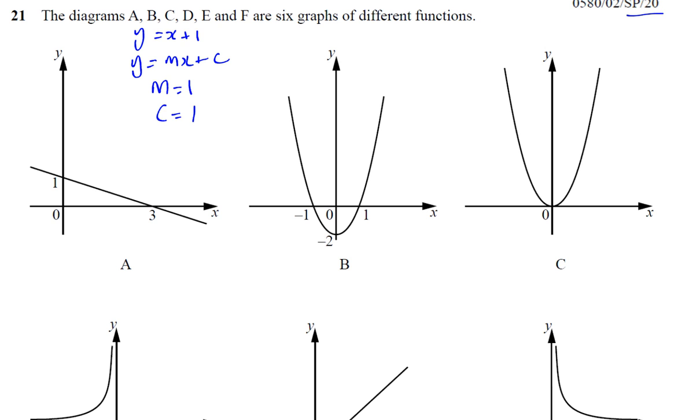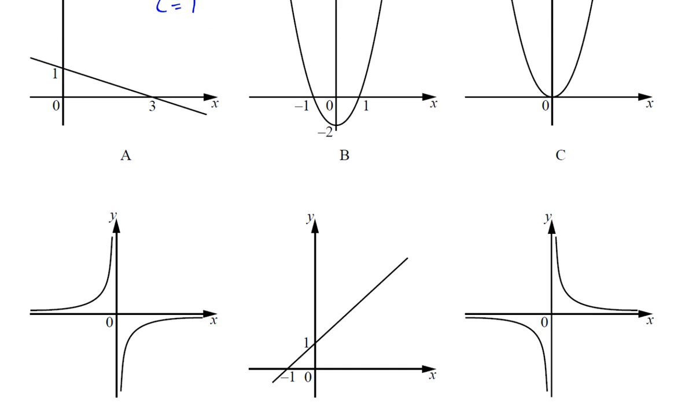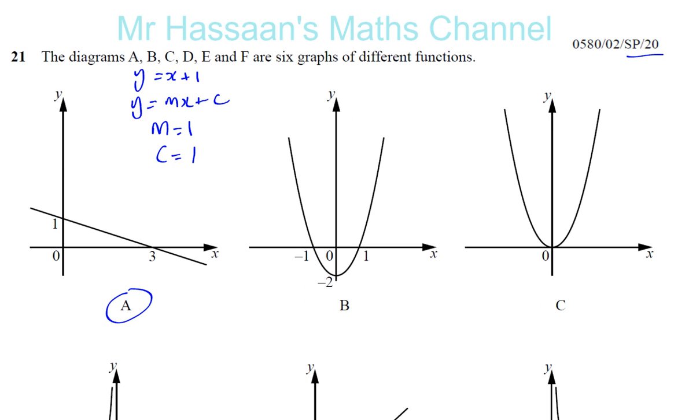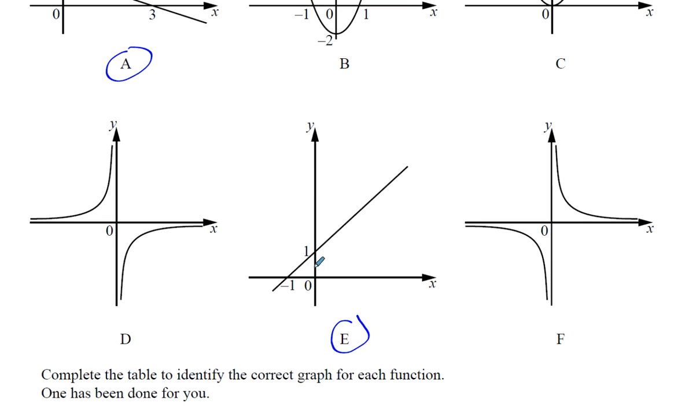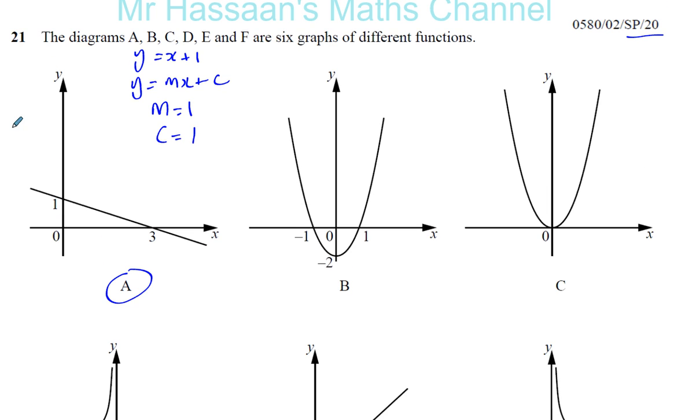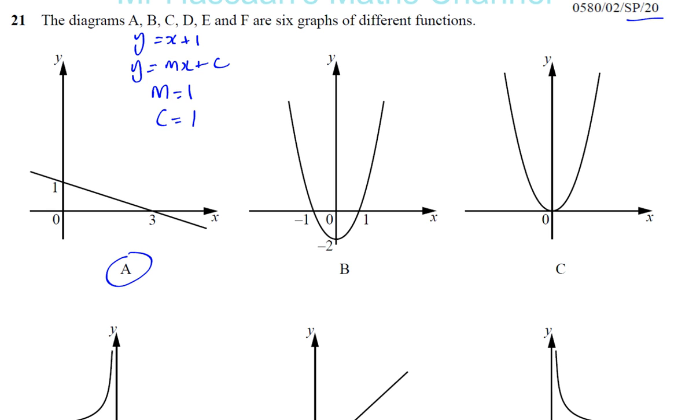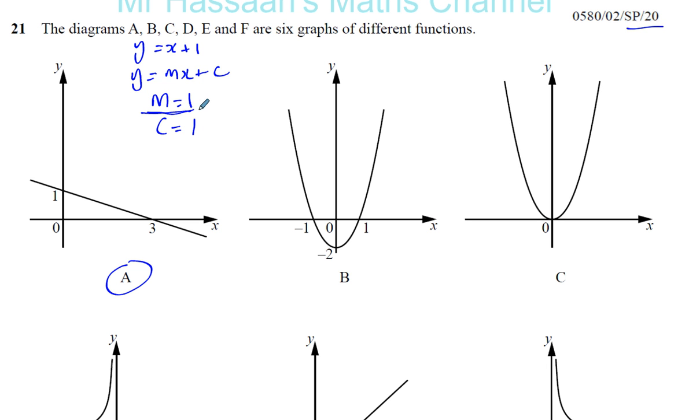So we know that it must be a straight line. So out of all these graphs, it can either be A or E. So now we can see that the y-intercept is 1. So this has got y-intercept of 1, and this has a y-intercept of 1. However, the thing that will make us realize is the gradient. Here we have gradient is equal to 1, a positive gradient. Positive gradients always slope upwards from left to right.